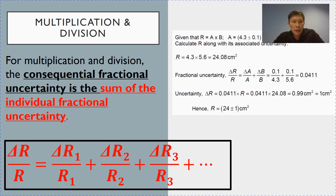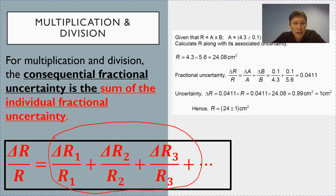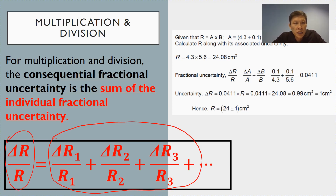Section 4.2: for expressions that involve multiplication and division, estimating the final uncertainty is a little bit trickier. Instead of summing up the actual uncertainty, for multiplication and division you have to sum up the fractional uncertainty. Note that after you sum up the fractional uncertainty, what you get is the final fractional uncertainty. To get the actual uncertainty, you still have to multiply the fractional uncertainty with the actual value of R.